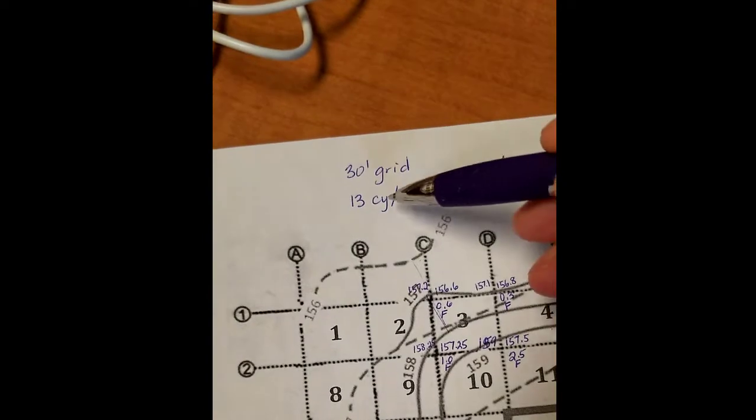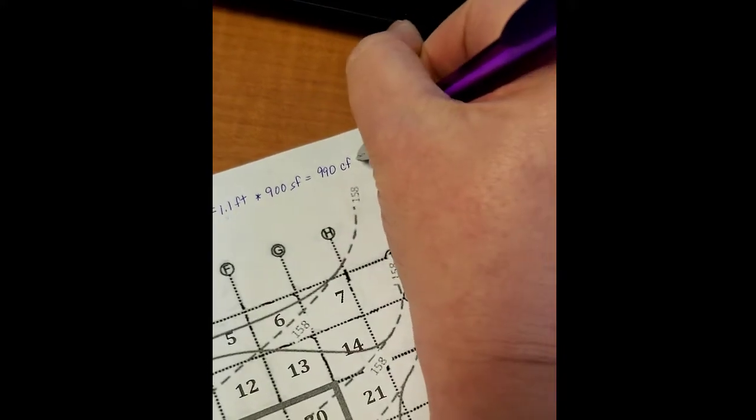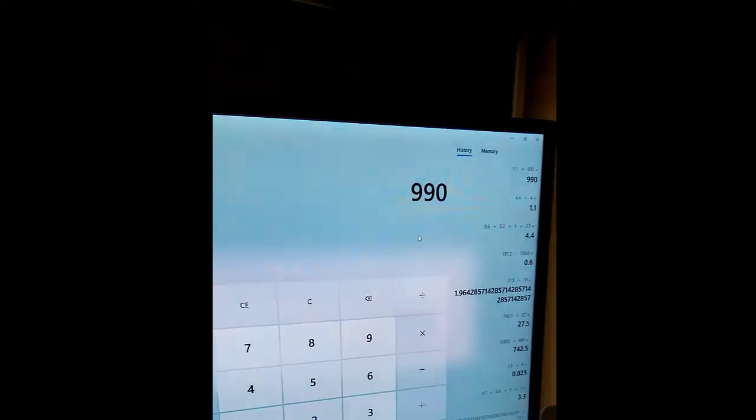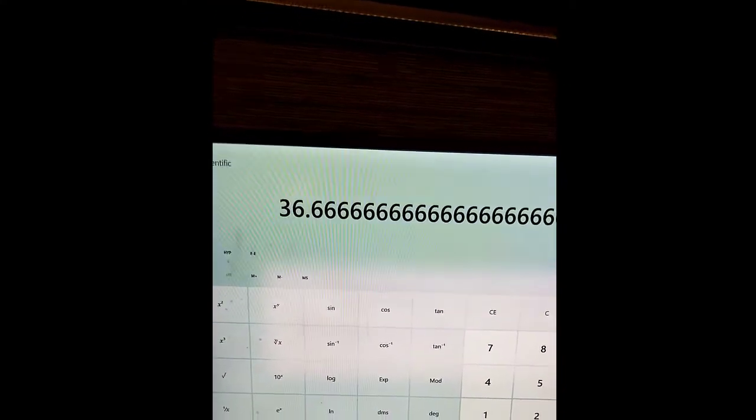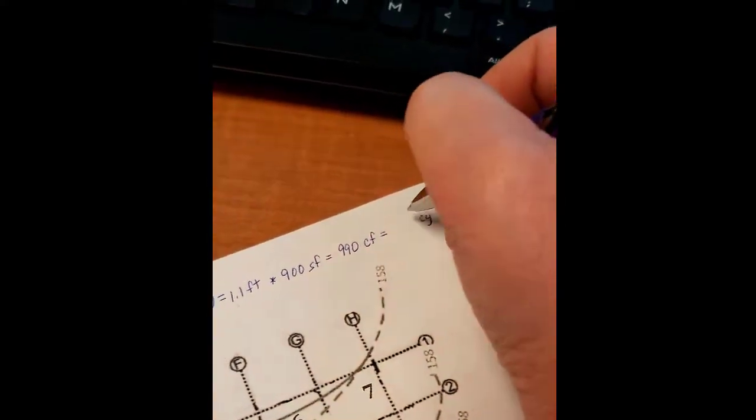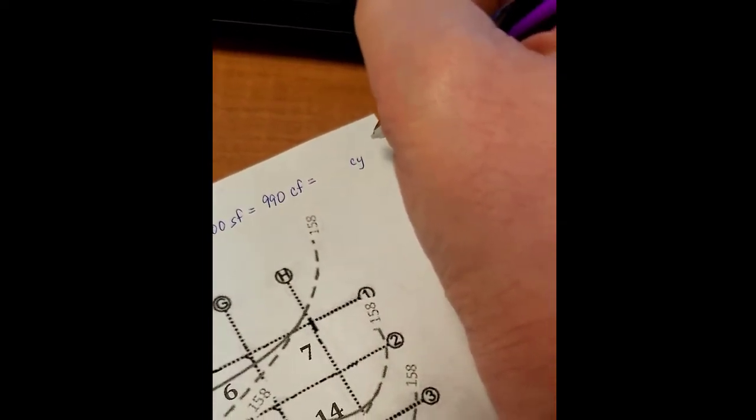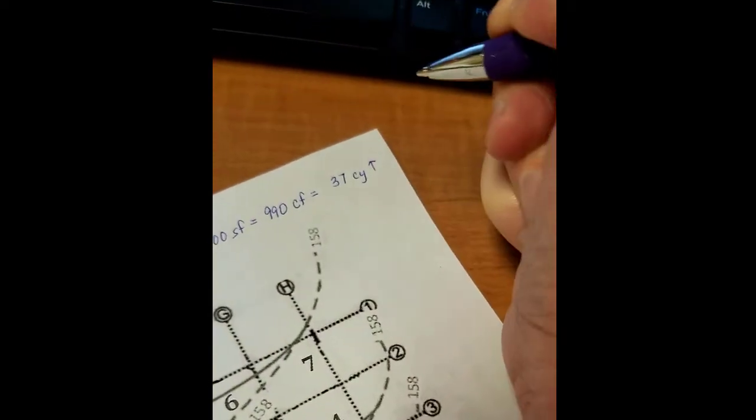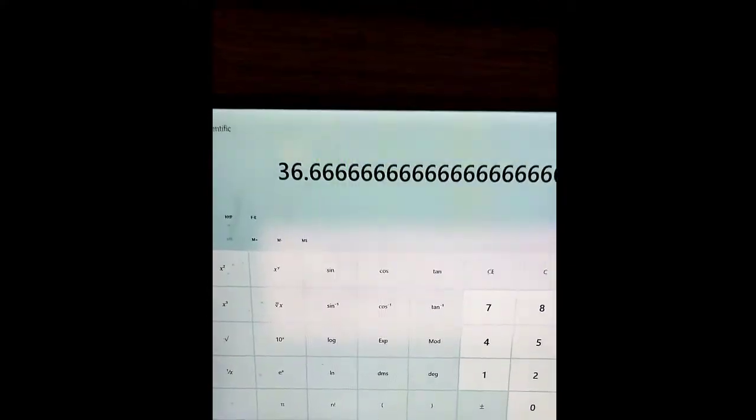Now we need to get it into cubic yards. You could multiply it by 1 over 27 or divide by 27. We'll take this, divide it by 27, and we can get 36 and two-thirds. So if I ask you for cubic yards, it's always going to be rounded up to the next cubic yard. So 37, and I'm just going to put an up arrow to indicate that I've rounded it up. Notice I have not changed it in here, and I'm going to figure out my trucks based on the actual amount.